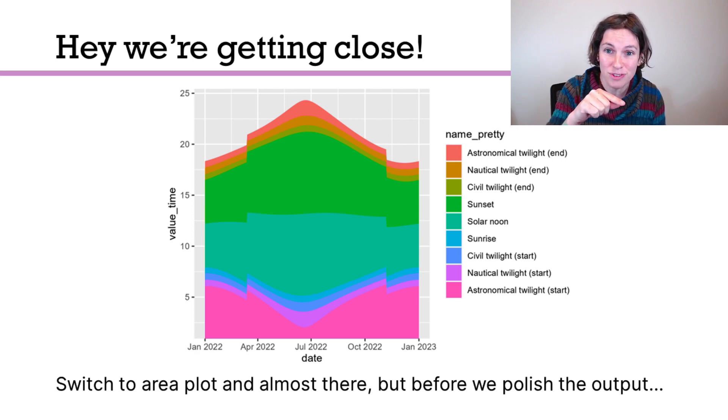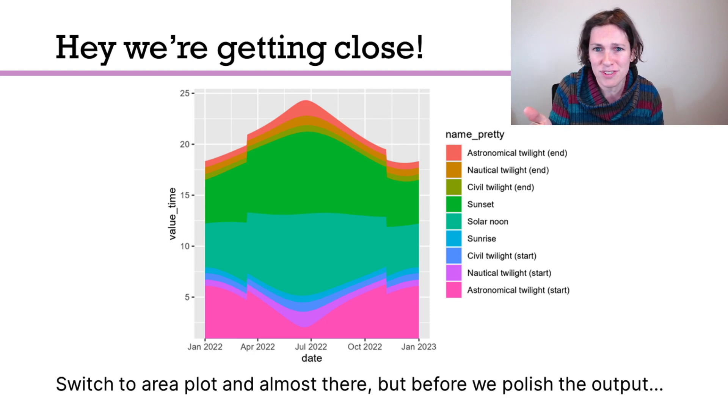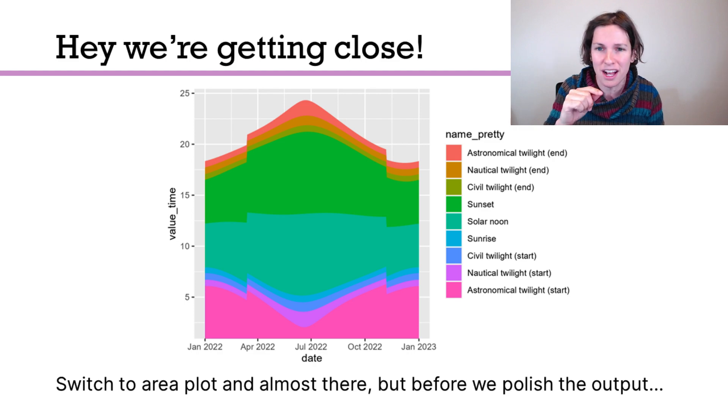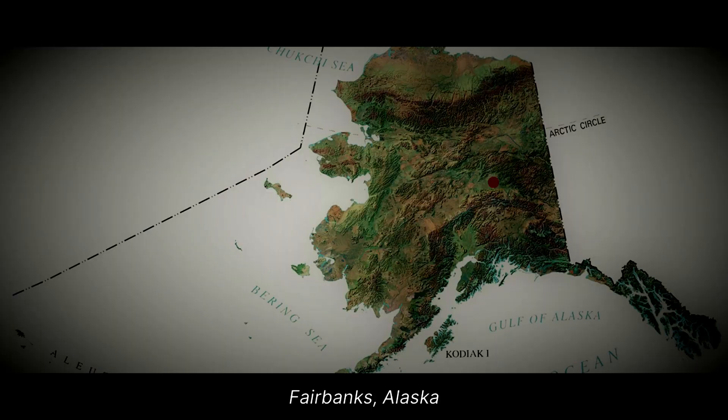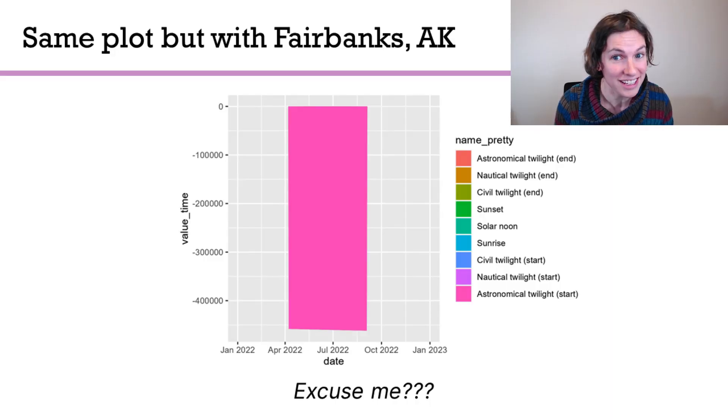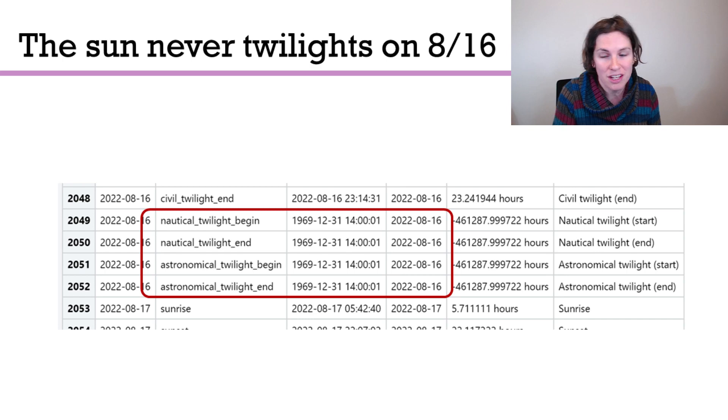That chart right there is for Seattle. Before we do the styling, just for the sake of testing, let's try throwing in a couple of other locations too — like Fairbanks, Alaska. It turns out if you try plotting Fairbanks, Alaska with this, you get utter nonsense. Alaska is so far north that there are days where the twilights do not occur, and so the API returns filler data. If we filter out the filler data, presumably things should then be okay.